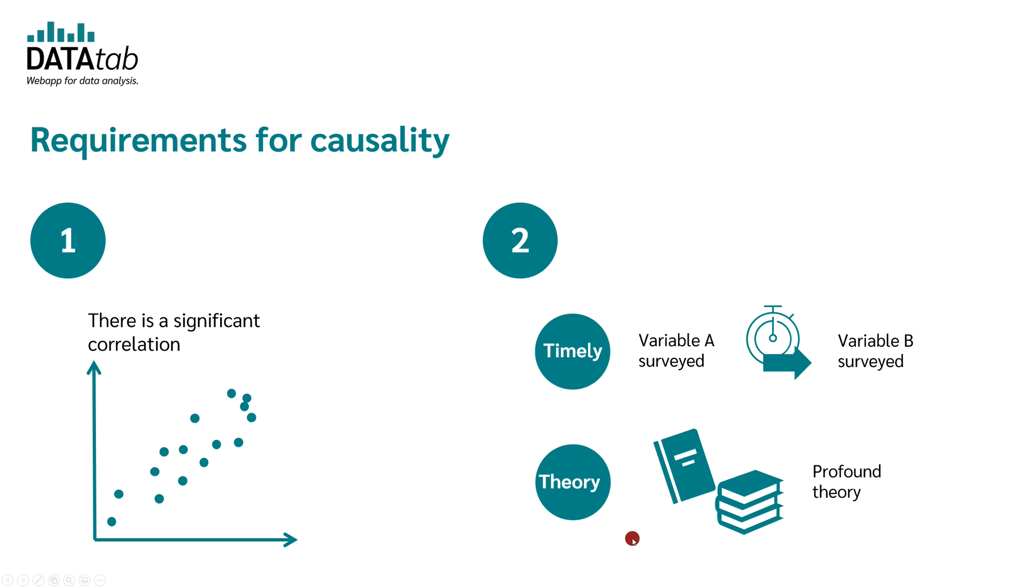If neither of the two is true, which means that there is neither a temporal order nor can the causality be justified by a well-founded theory, then we can only speak of a relationship but never of causality. Thus, it cannot be stated that variable A influences variable B or vice versa.